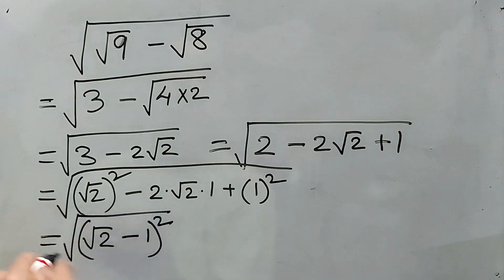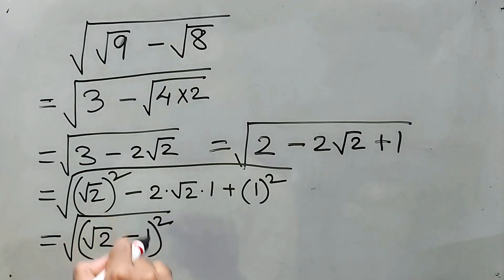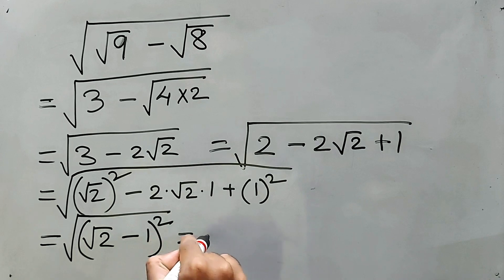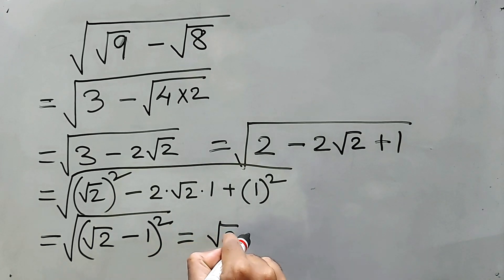Again, this is still remaining, right? So removing this both square root of 2 minus 1. Simple. This is your answer.